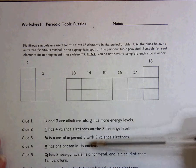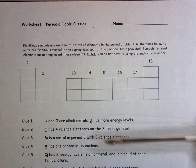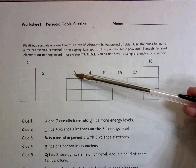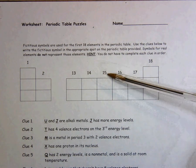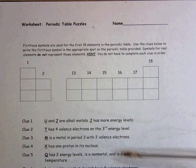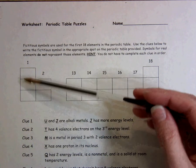Again, look at number of protons, number of electrons, number of valence electrons. Remember, valence electrons is the last number of the group number. All of this information will help you put these letters in the correct spots.